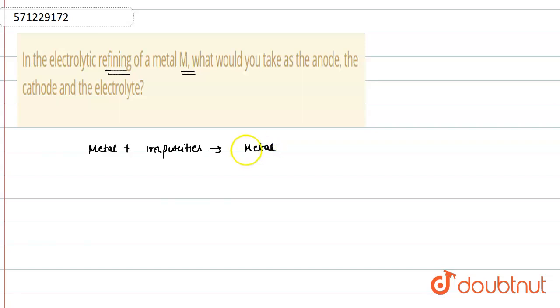For this, we follow a proper procedure which is known as refining. This refining occurs with the use of electricity, so that's why it is known as electrolytic refining. In this type of electrolytic refining,